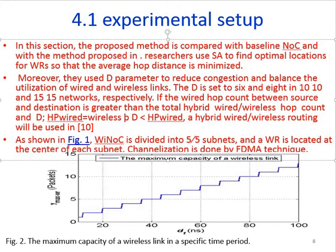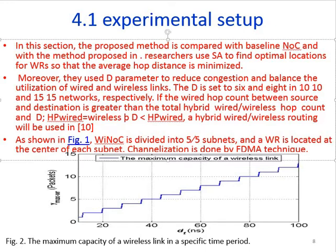In the experimental setup, the proposed method is compared with the baseline network on chip and with a prior method in which researchers use simulated annealing (SA) to find optimal locations for wireless routers so that average hop distance is minimized. They use a D parameter to reduce congestion and balance the utilization of wired and wireless links. D is set to 6 and 8 in the 10x10 and 15x15 networks respectively. Hybrid wired-wireless routing is used when the wired hop count between source and destination exceeds the hybrid hop count plus D.